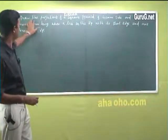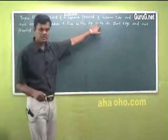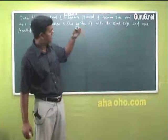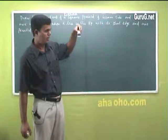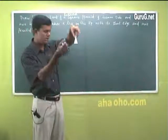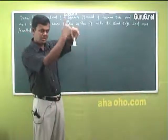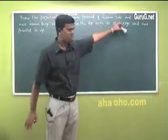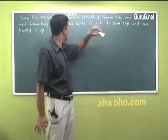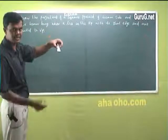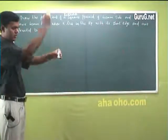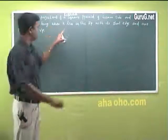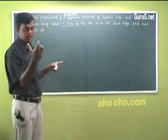The question reads: draw the projections of a square pyramid of 40 millimeter side. I am holding a small piece for your instruction — this is a square pyramid. It should have an apex at the top, a single point, and the remaining sides have a base. Square pyramid of 40 mm side, and axis 60 millimeter — the axis is the center point going through to the apex, and the height is 60 millimeters long.